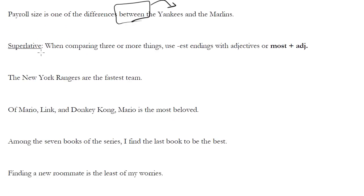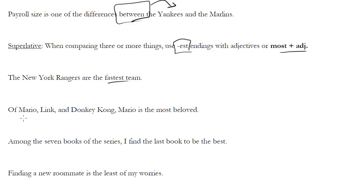What about the superlative? With the superlative, you use it when you're comparing three or more things, and you use the -EST ending, or 'most' plus an adjective. The New York Rangers are the fastest team — assuming you're comparing them to more than two teams, we use 'fastest.' If it was just the Islanders and the Rangers, the Rangers are the faster team — that's better when comparing two things. Of Mario, Link, and Donkey Kong, Mario is the most beloved. We're comparing three things, so we don't say Mario is 'more beloved' — we say he is 'the most beloved.'